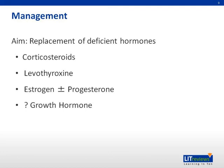Estrogen alone is given if a woman has had a hysterectomy; if not, a combination of estrogen and progesterone is given. For patients treated with this option, future pregnancies may be possible with an injection of gonadotrophins to induce ovulation. Growth hormone replacement is controversial in a grown woman, and standard recommendations are currently not available. It is only decided by the physician on a case-by-case basis and should only be considered after all other deficient hormones are replaced.